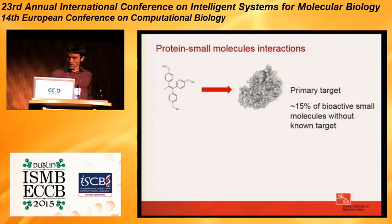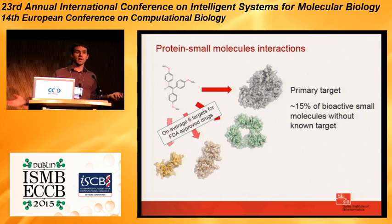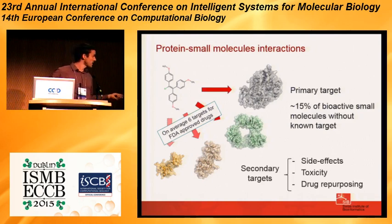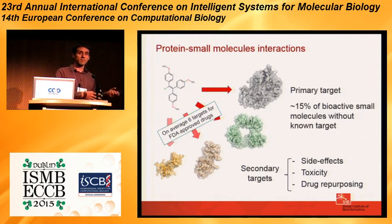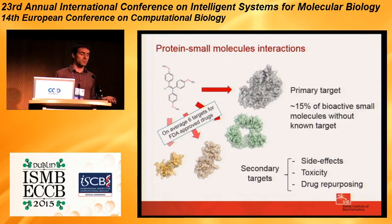Another important feature of small molecules is that typically they do not bind only one target. Even for approved drugs, it is estimated that on average there are at least six different targets bound by these molecules. These secondary targets are also very important — they may explain side effects and toxicity, and they are interesting because they could allow you to reuse a known molecule with low toxicity for another purpose, since it also binds another protein involved in a different pathway.